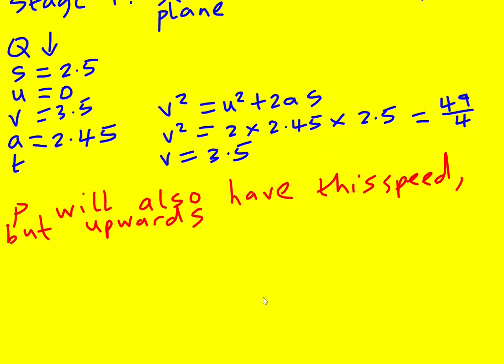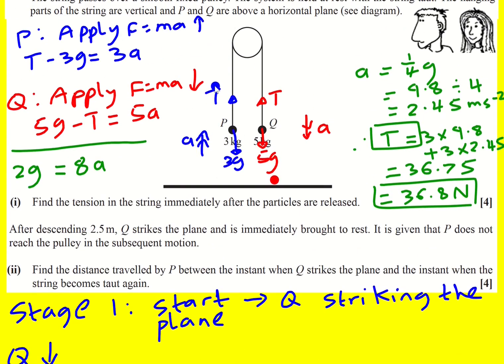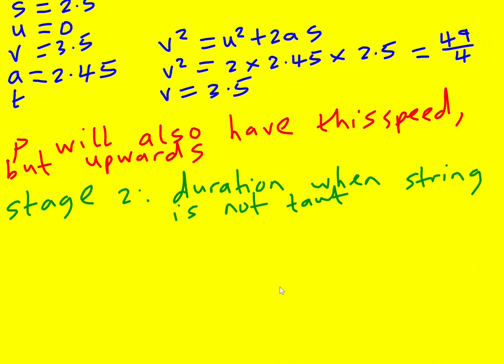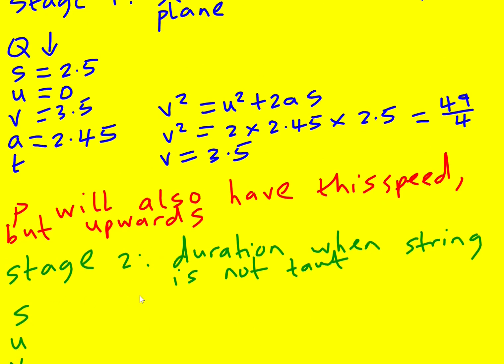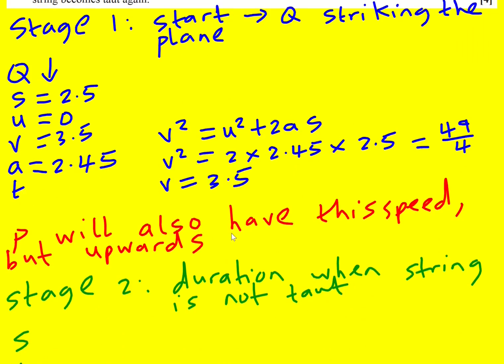Okay, that's going to be useful because I'm now going to look at stage two. And it's going to be the duration when the string is not taut. So like I said, it's going to be going up and back down. Now, I've just thought of something actually. When we use SUVAT, we find a displacement. So the displacement is going to be zero during that time period. But I've been asked to work out the distance.